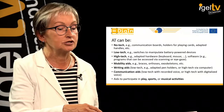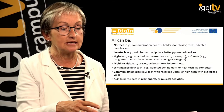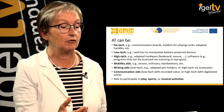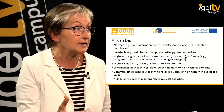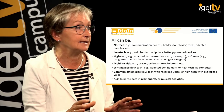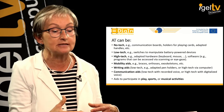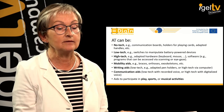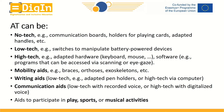A typical example of low-tech assistive technology would be switches to manipulate anything that's battery powered. And then of course we have the range of high-tech AT — for example, adapted hardware. I will later tell you about adapted keyboards and adapted mice, or software that can be accessed by scanning or by eye gaze, so we do not have to use a keyboard when a person is not able to do so.